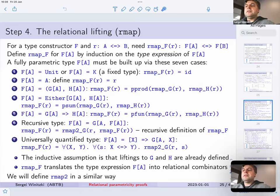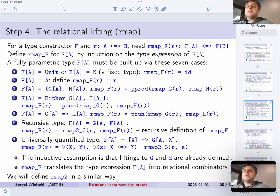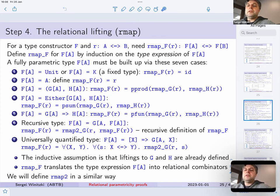The first case is a unit type or a fixed type. In that case, we lift any relation r and the result is an identity relation between k and k — for example, between unit and unit. The next case is when the type constructor is just the type parameter a, and then the lifting is defined as just the relation r between a and b.